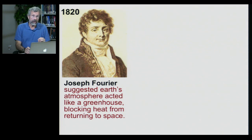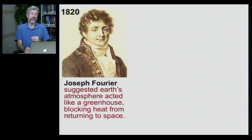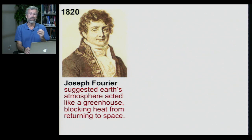As long ago as 1820, nearly 200 years ago, Joseph Fourier suggested that the Earth's atmosphere acted like a greenhouse, blocking heat returning to space. He said if we didn't have this layer of air above the Earth's surface, every night all the heat absorbed from the sun would just radiate back out into space — so the atmosphere was a bit like a blanket.